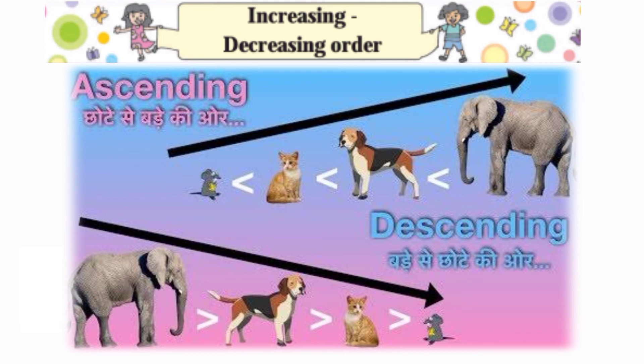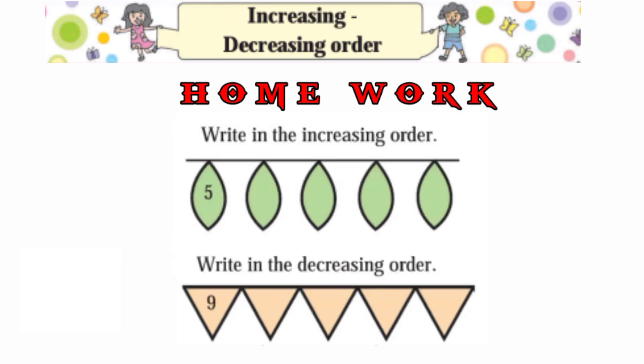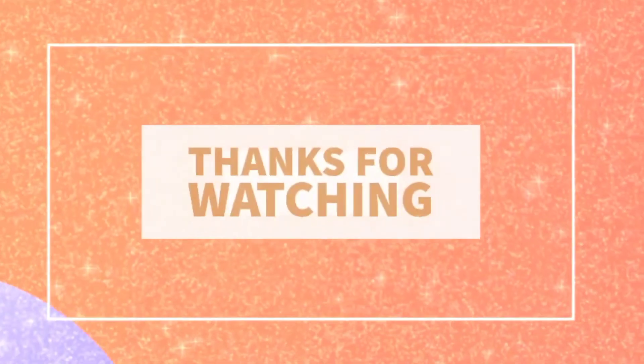Increasing order ko hum ascending kehte hain, and decreasing order ko descending kehte hain. Your homework is there — you are going to write numbers in increasing order, and on the down side you are going to write in decreasing order.